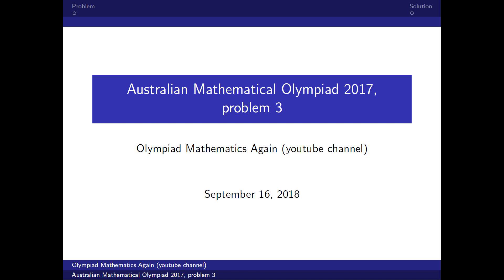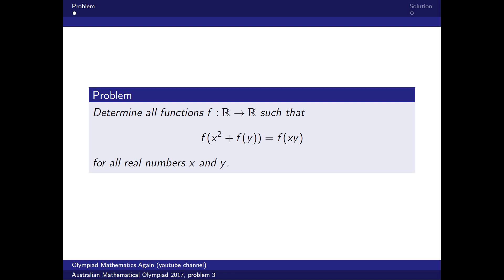Today we are going to discuss another problem from last year's Australian Mathematical Olympiad, and this time it will be a functional equation. The problem can be stated as follows: determine all functions f from real numbers to real numbers such that the following equation holds for all real numbers x and y. Let's examine the solution.